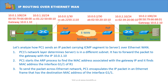Let's look into IP routing in Ethernet WAN by analyzing how PC1 sends an IP packet carrying an ICMP segment to Server1 in this diagram. First of all, PC1's network layer determines that Server1 is in a different subnet. It has to forward the packet to the gateway with IP 10.0.1.10. PC1 then starts the ARP process to find the MAC address associated with the gateway IP, and it finds the MAC address of interface G1/1 of Router1.